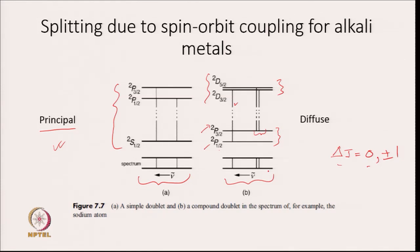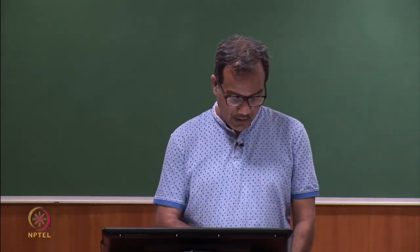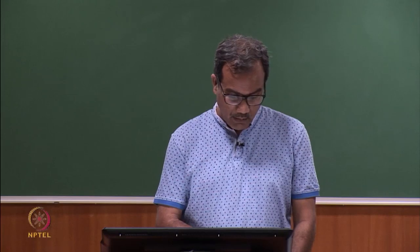The compound doublet arises because of the very narrow gap between 2D₃/₂ and 2D₅/₂. The λ_max of these two transitions is at almost the same position, and sometimes it looks like one diffuse peak. That is why the triplet is known as a compound doublet.